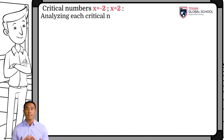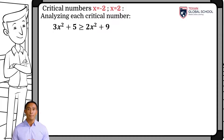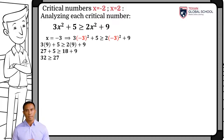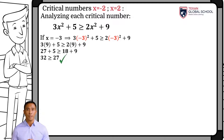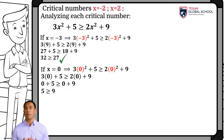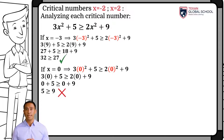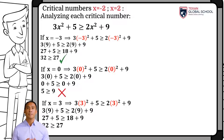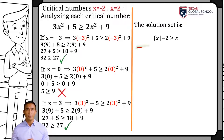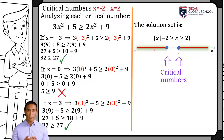We propose a value less than negative 2. So, if x is equal to negative 3, for example, by substituting in the original inequality, results that the inequality is true, meaning that values less than negative 2 belong to the interval. Now, we propose a value between the critical numbers negative 2 and 2. So, if x is equal to 0, for example, the inequality is false, since 5 is not greater than or equal to 9, indicating that elements between the critical numbers do not belong to the solution interval. Finally, we propose a value greater than 2; for example, if x is equal to 3, the inequality is true, since 32 is greater than or equal to 27. Then, the solution set includes all those values of x less than or equal to negative 2 and greater than or equal to 2. We can see on the number line the critical numbers and the values proposed to verify the solution interval.